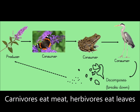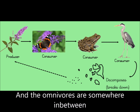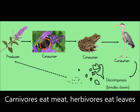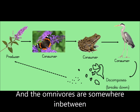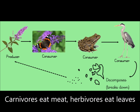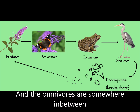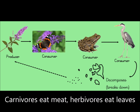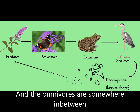The animals! Carnivores eat meat, herbivores eat leaves, and the omnivores are somewhere in between. Let me hear you now — carnivores eat meat, herbivores eat leaves, and the omnivores are somewhere in between.